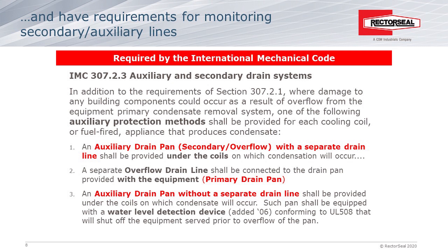From the 2018 IMC code commentary: an auxiliary redundant drain pan or secondary drain is required for equipment locations where condensate overflow would cause damage to the building. The purpose of the auxiliary drain pan and secondary drain is to catch condensate spilling from the primary condensate removal system, protecting the building from structural and finished damage — not building contents such as storage. Condensate drains are notorious for clogging due to debris, lint, dust, and bio growths in drain pans and pipes. This section lists four options for preventing damage where the equipment is located in attics, above suspended ceilings, furred spaces, and upper stories, and one of the four methods must be used.